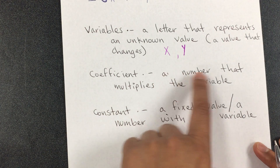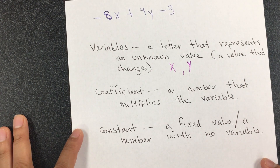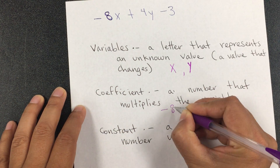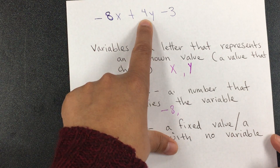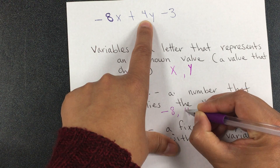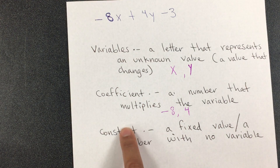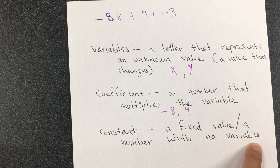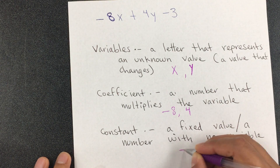A coefficient is a number that multiplies the variable — meaning it's right next to the variable. Next to x is negative 8, and we include the sign, so negative 8 is one coefficient. The other is 4 — positive 4; we don't need to write the plus since we assume a number without a sign is positive. Finally, a constant is a fixed value, a number with no variable. Including the sign, the only term without a variable here is negative 3.